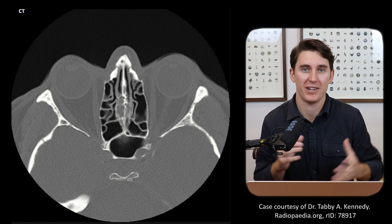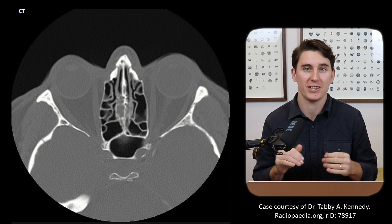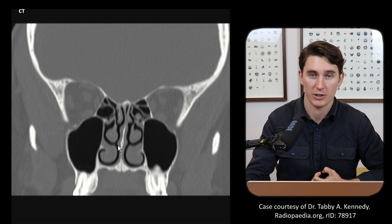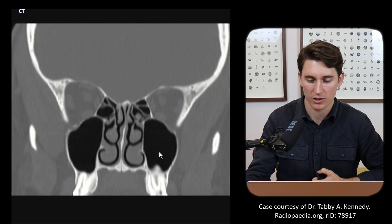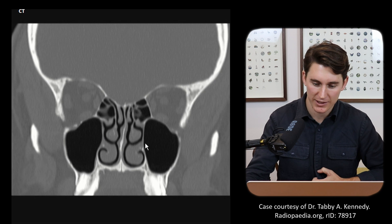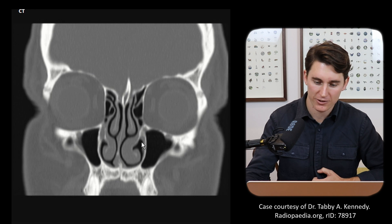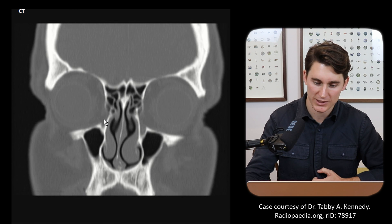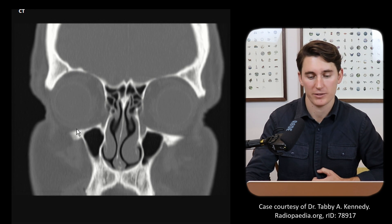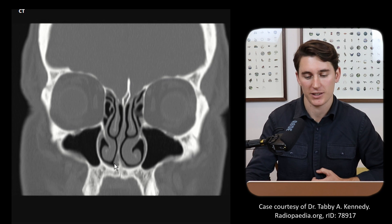So there we have it — a brief run through of our paranasal sinuses. We've identified the frontal, maxillary, ethmoidal, and sphenoidal sinuses and the pathways into the nasal cavities. You might be wondering what drains into the inferior meatus. Well, it's not left out — we have a lacrimal recess where our lacrimal sac sits, and our nasolacrimal duct drains into the inferior meatus. That's why when you cry, you have tears coming into the orbit as well as your nose running, because the tears flow into that inferior meatus.